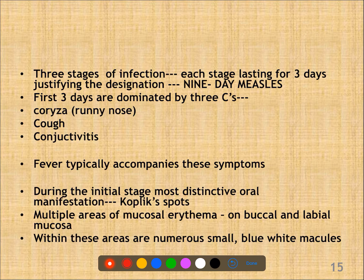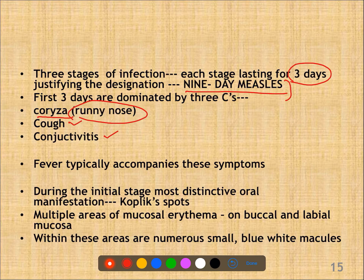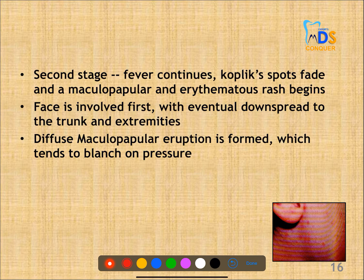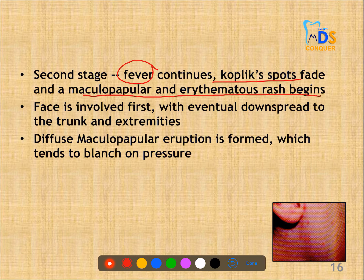There are 3 stages of infection, each lasting about 3 days, so measles lasts about 9 days total. The first 3 days are dominated by the 3 C's: coryza (runny nose), cough and conjunctivitis, accompanied by fever. During the initial stage, an important characteristic feature is Koplik's spots — multiple areas of mucosal erythema seen on buccal and labial mucosa, appearing as small blue-white macules. In the second stage, fever continues, Koplik's spots fade, and a maculopapular erythematous rash begins on the face first, which then downward spreads to the trunk and extremities.